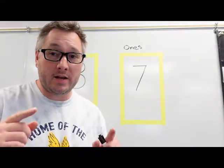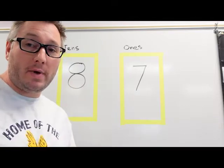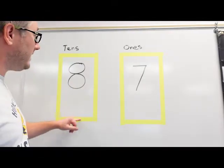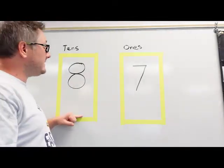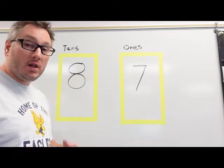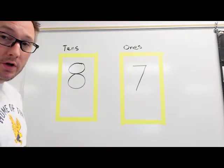Now let's take a number and do subtraction or go backwards. Here's our number 87. Eight tens, seven ones. Let's build it on our whiteboard. Are you ready?